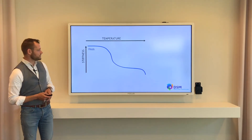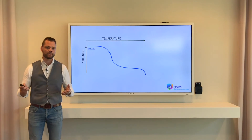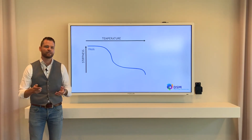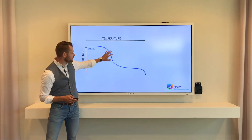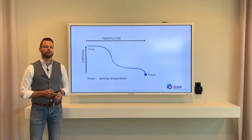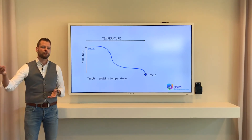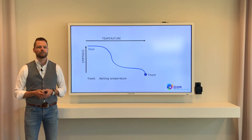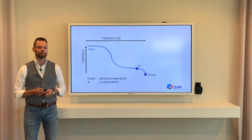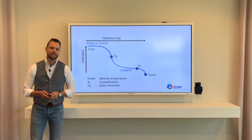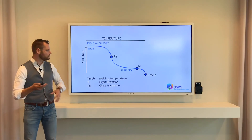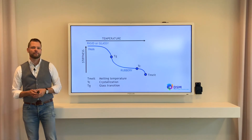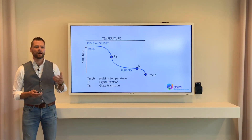If we look at polyamide 6-6, how does its mechanical performance look? On the vertical axis you see for example the stiffness of the material, and on the horizontal axis you see the temperature. There are three very important points in the property profile. The first is the melt temperature — above it the polymer is fluid, below it is solid. Then you have the crystallization temperature, where the material gets its structural integrity. The third point is the glass transition temperature, where there is a big step change in mechanical performance. Above it is the rubbery plateau; below it is the rigid or glassy state, where the polymer has its highest strength and stiffness.